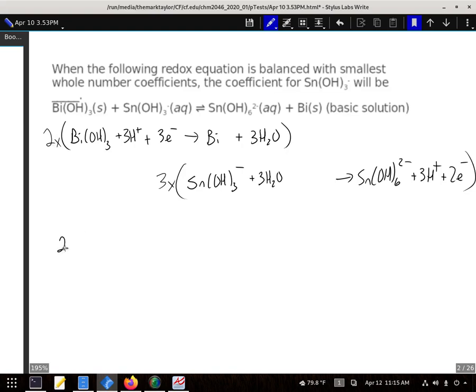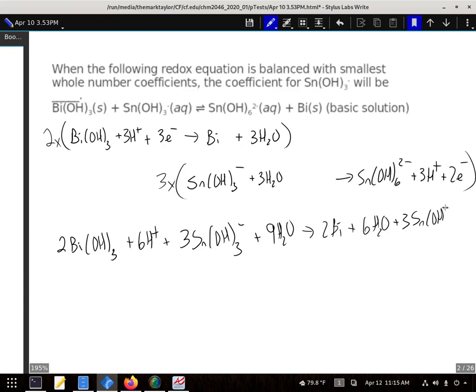In my balanced equation, we'll have two Bi(OH)3 and six H+, along with three Sn(OH)3- and nine waters, going to form two Bi and six waters, along with three Sn(OH)6-2 and nine H+.